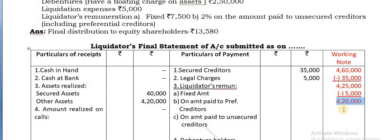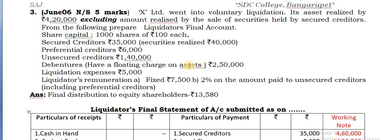Now the balance you are getting is 4,20,000. Next, the liquidator's fixed remuneration amount - how much is the fixed amount here? It is given as 7,500.